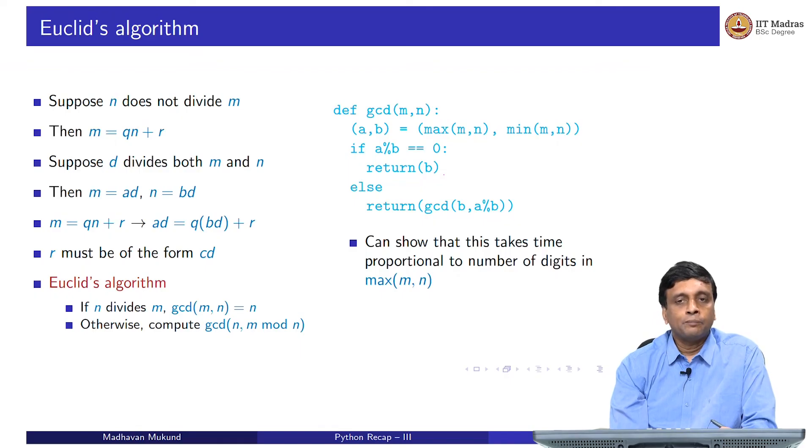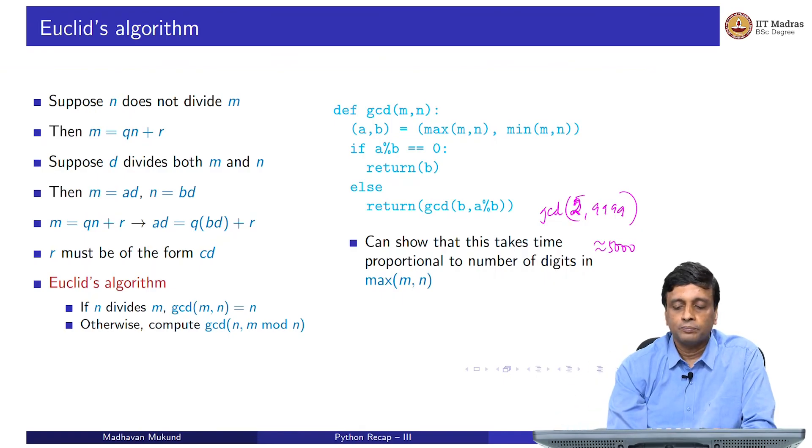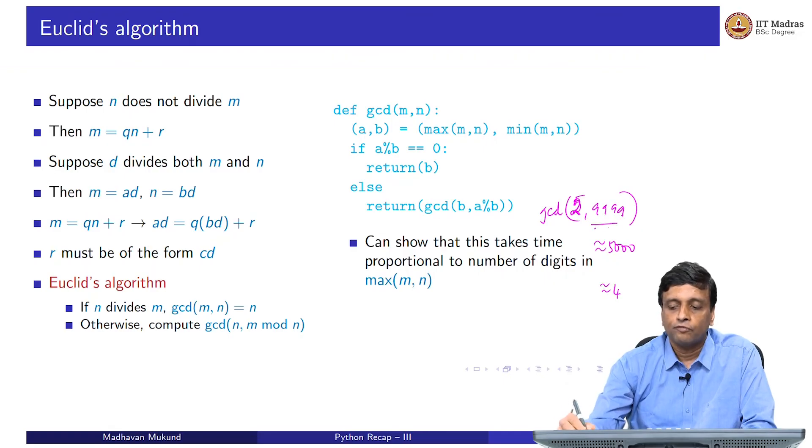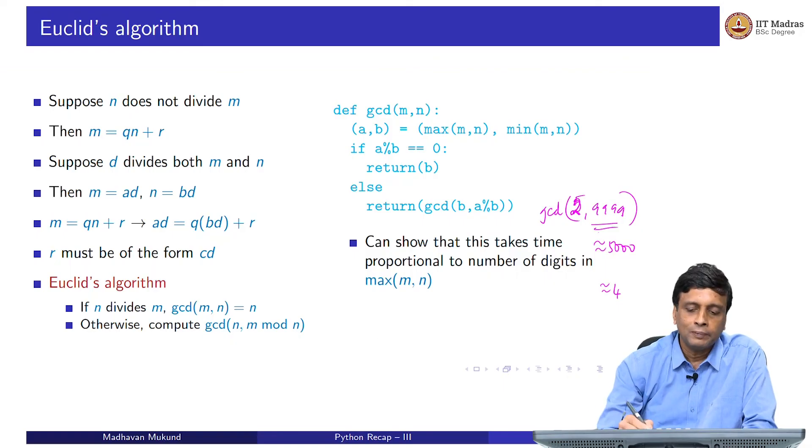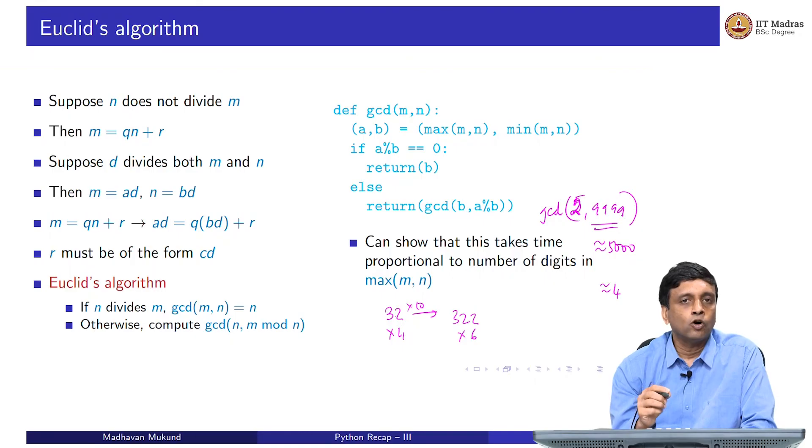We can actually show that this is a dramatic improvement. This takes time proportional to the number of digits. Earlier we had looked at for example, the GCD of 2 and 9999. We said that this is going to take something like 5000 steps, because it takes time proportionate to the maximum of the two numbers. But this GCD will actually take something proportional to 4, because there are four digits in this. In general, when we are dealing with numbers, this is what we would like. Think of multiplication. If I take 32 times 4, and I take 322 times 6, my number on the right has multiplied by a factor of 10. But clearly, if I do the multiplication, the extra work that I get is I have to multiply one more digit. A reasonable algorithm for any numerical problem like this should grow as the number of digits. It would be tremendously difficult for us if in order to add 2 four digit numbers, it takes 10 times as long as it takes to add 2 three digit numbers. It does not - we just have to carry one more step.